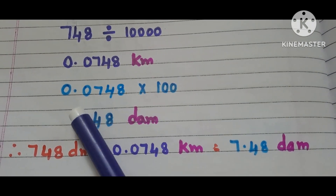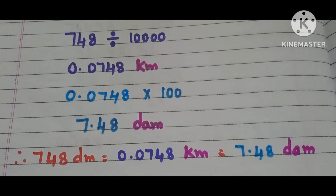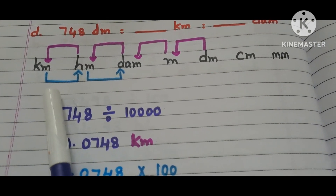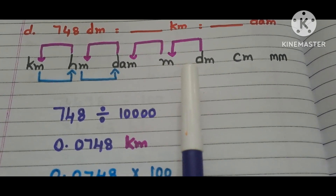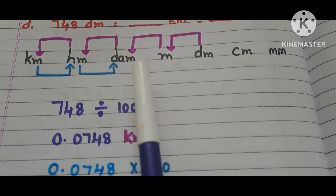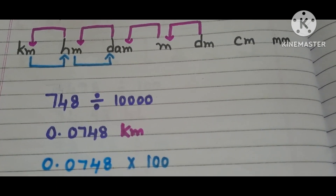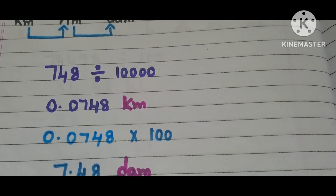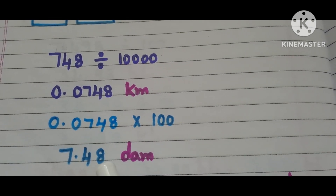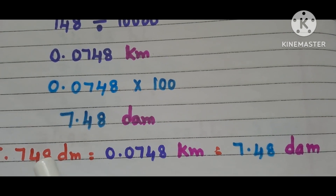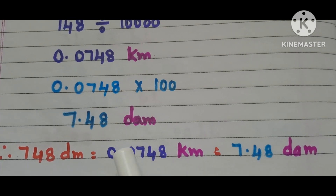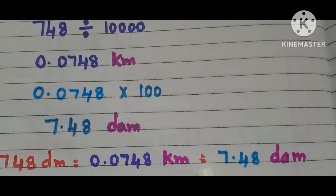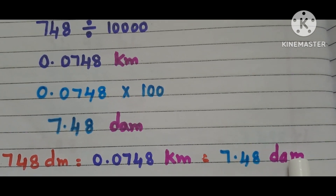Now, convert 0.0748 kilometers into decameters. Where are kilometers in the table? Here it is. Where are decameters in the table? Here it is. So, here we have to move from left side to right side 2 steps. So, multiply 0.0748 with 100. Then it becomes 7.48. Therefore, 748 decimeters is equals to 0.0748 kilometers and that is equals to 7.48 decameters.